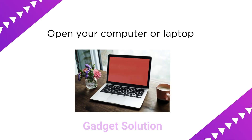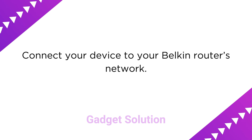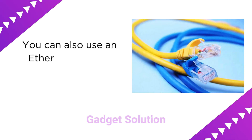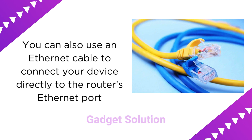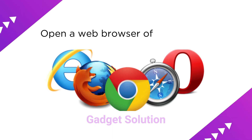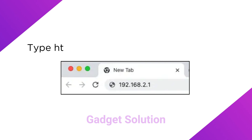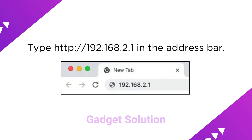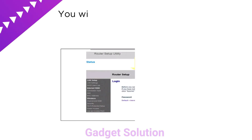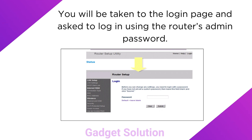Open your computer or laptop. Connect your device to your Belkin router's network. You can also use an Ethernet cable to connect your device directly to the router's Ethernet port. Open a web browser of your choice and type http://192.168.2.1 in the address bar.